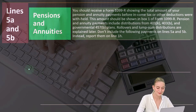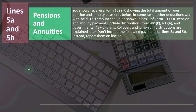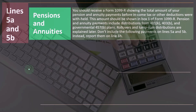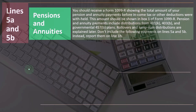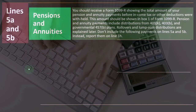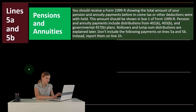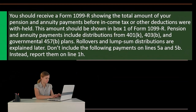Given that lines 5A and 5B cover pension and annuities, you should receive a Form 1099-R showing the total amount of your pension and annuity payments before income tax or other deductions were withheld. This amount should be shown in box one of Form 1099-R.